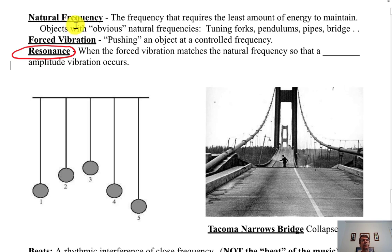Let's talk about natural frequency. Natural frequency is the frequency that requires the least amount of energy to maintain — that's the definition. Basically, there are some things that have nice natural frequencies: tuning forks, basically all musical instruments. Take a piano — if you hit any key, that's the frequency of that string. It depends on how tight that string is and how big that string is. On a piano, there are 60 strings.